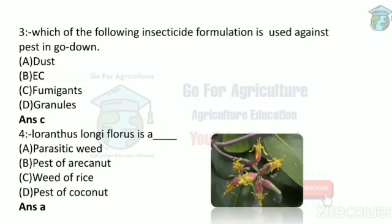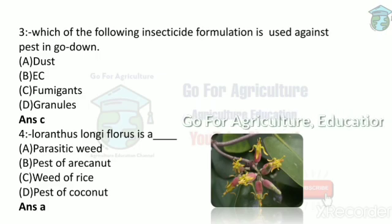Next question: which insecticide formulation is used against pests in godowns? First, godowns are places where food products like rice, vegetables, and fruits are stored — agricultural produce. To control pests in godowns, we use insecticide formulations. Formulation types include dust, fumigants, granules, and emulsifiable concentrates. We won't use dust because it is in fine particles and may leave residue on produce like fruits.